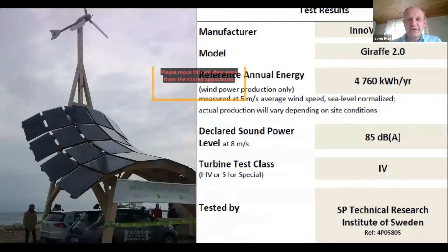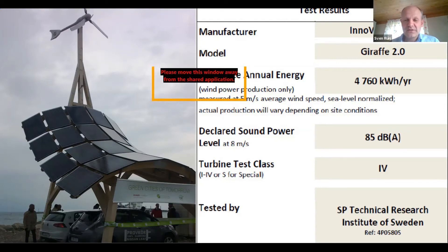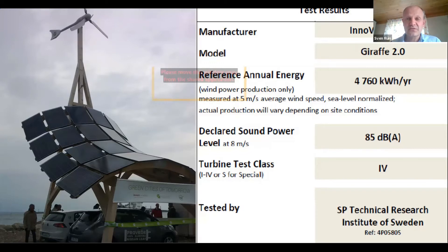Here is an example of the international consumer label defined by the IEC. This is for a combination of turbine and tower called Giraffe II by Innoventum in Sweden, but the turbine is actually a Windspot turbine. The reference annual energy shown is only for the wind turbine — the solar PV panels will produce additional kilowatt hours. You can see there is also a declared sound power level, and the turbine test class, meaning the turbine has gone through a duration test to this class. You can see who has tested it, and most importantly, for this label to be valid, the test reports must be available.